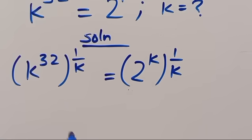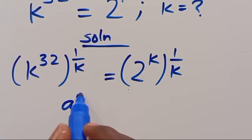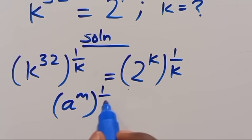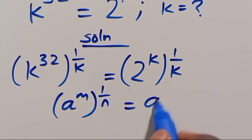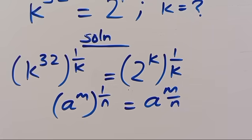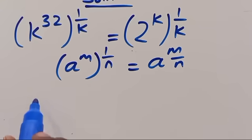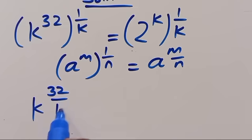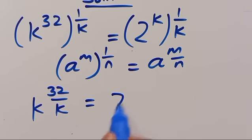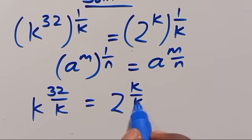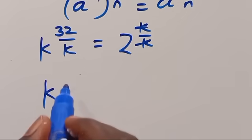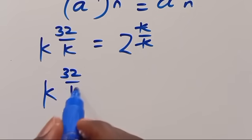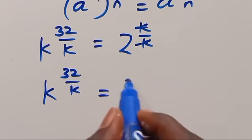Let us recall that when we have A to the power of M in parentheses to the power of 1 divided by N, this can be simplified as A to the power of M divided by N. So from here, we can have K to the power of 32 divided by K equals 2 to the power of K divided by K. The K's cancel out, and we are going to have K to the power of 32 divided by K equals 2.